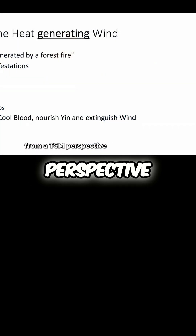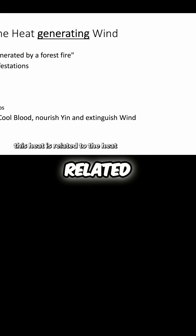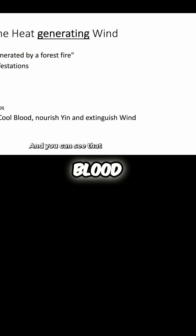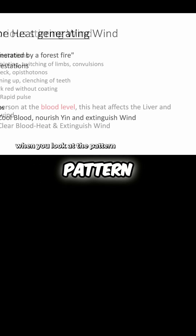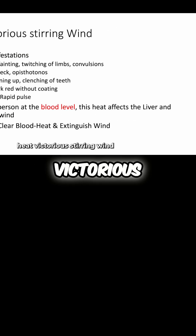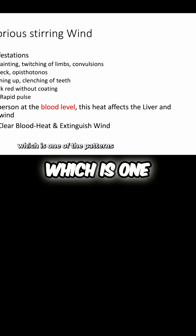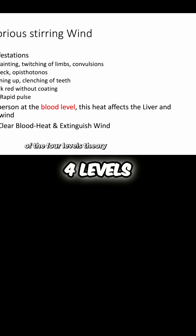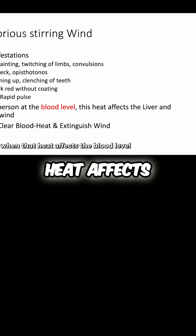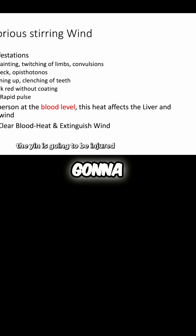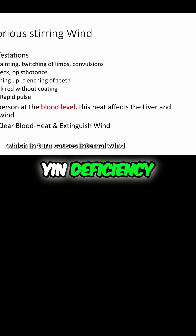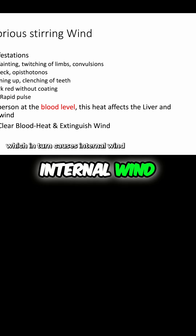From a TCM perspective, to get even more specific, this heat is related to the heat that's affecting the blood. You can see that when you look at the pattern 'heat victorious stirring wind,' which is one of the patterns in the blood level of the four levels theory. When that heat affects the blood level, the yin is going to be injured, and that's going to cause yin deficiency, which in turn causes internal wind.